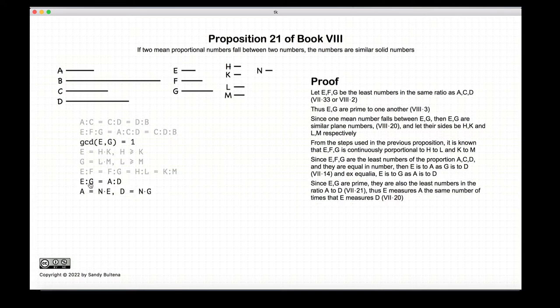Now since e and g are relatively prime, that means that e is a multiple of a the same number of times that g is a multiple of d. So we have that a is equal to n times e. But e is equal to h times k. So therefore, a is equal to n times h times k, and is hence a solid.